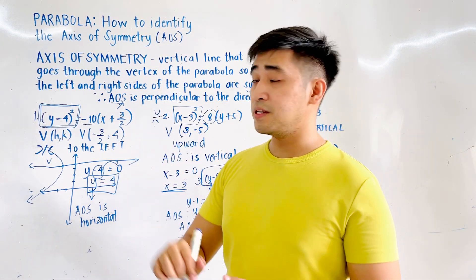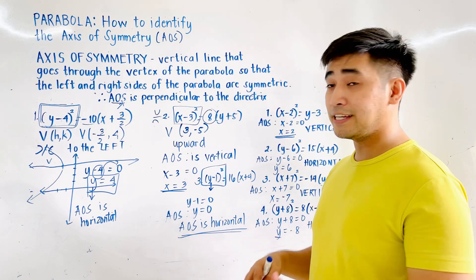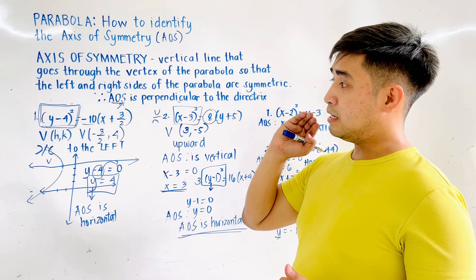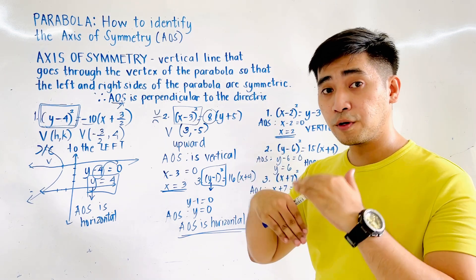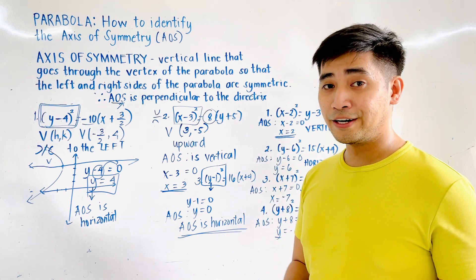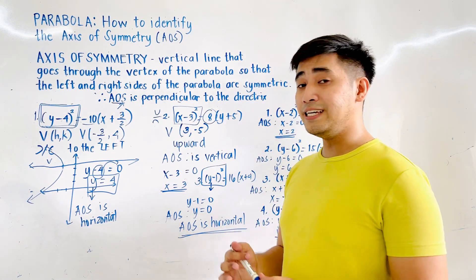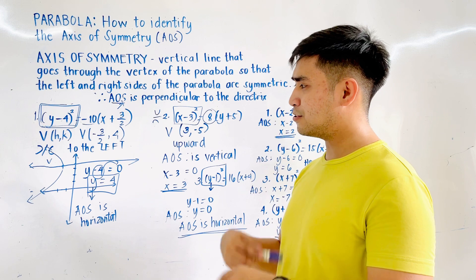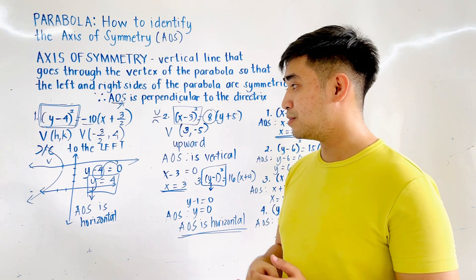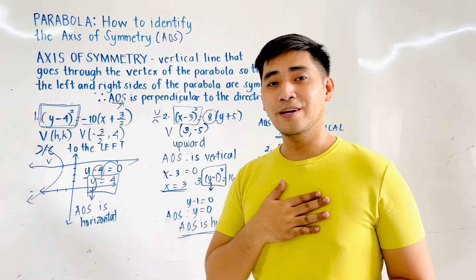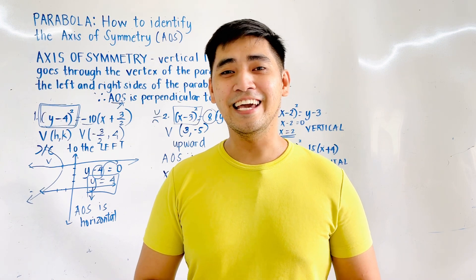Once again, the axis of symmetry is the vertical line that goes through the vertex of the parabola so that the left and right sides — or the upper and lower parts — of the parabola are symmetrical. The axis of symmetry is also perpendicular to the directrix. To determine the axis of symmetry, identify the variable being squared and equate that term to 0 — that becomes the axis of symmetry. I am Engineer Judd Edward Hernandez saying that mathematics is always fun. Goodbye and God bless.